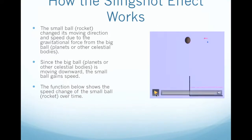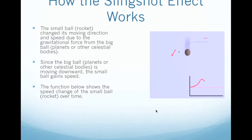How the slingshot effect works. This short video simulates the slingshot effect. The small ball or rocket changes its moving direction and speed due to the gravitational force from the big ball, or planets or other celestial bodies. Since the big ball is moving downward, the small ball gains speed. The function shown illustrates the speed change of the small ball over time.